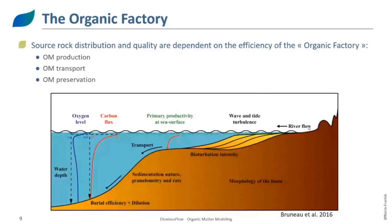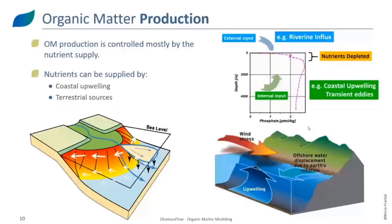One end member of nutrient supply would be through upwelling systems. You'd have deep-sea currents that upwell to the surface along the shelves, bringing oxygen-rich and nutrient-rich waters from the deep sea, inducing primary productivity in the photic zone in those areas. The other possibility is to have nutrients supplied from the land by weathering and erosion of the hinterland, which also induces primary productivity. Both could be present in the same place at the same time, and they would result in differences in source rock properties and distribution.